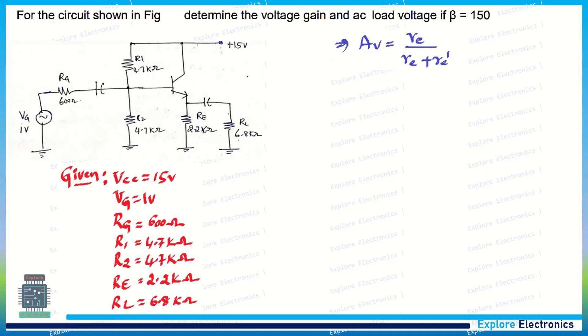First we need to find out voltage gain. The voltage gain expression is RE/(RE + re'). Here we need to find out RE as well as the internal resistance re'.